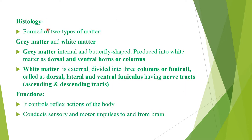The histology of the spinal cord shows that it is formed of two types of matter: grey matter and white matter. Grey matter is internal and butterfly-shaped in mammals, producing into dorsal horns and ventral horns. White matter is external and divided into three columns called funiculi: dorsal, lateral, and ventral funiculus, each having nerve tracts. These nerve tracts are of two types: ascending nerve tracts and descending nerve tracts. The function of the spinal cord is to control reflex actions of the body and conduct sensory and motor impulses to and from the brain.